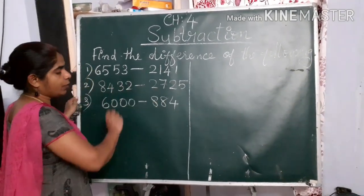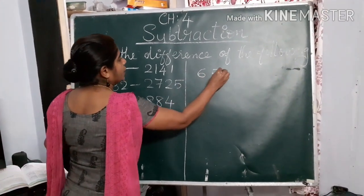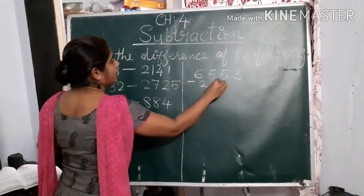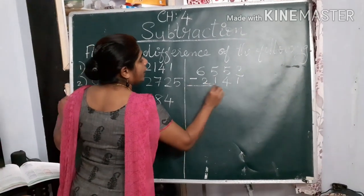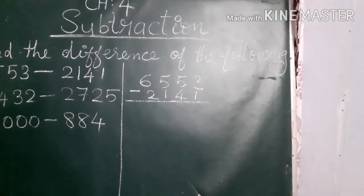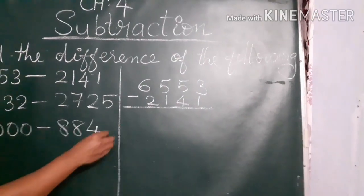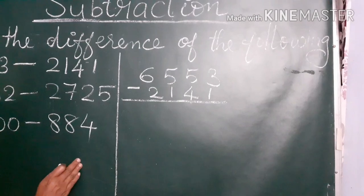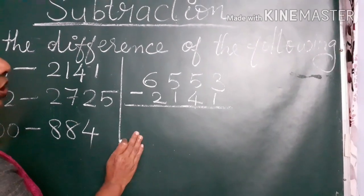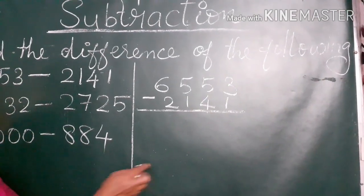The first question I am going to solve: 6,553 minus 2,141. Here, 6,553 is bigger than 2,141. We arrange the numbers according to the place value, then we are going to start the subtraction. From the ones place onwards we will start the subtraction.